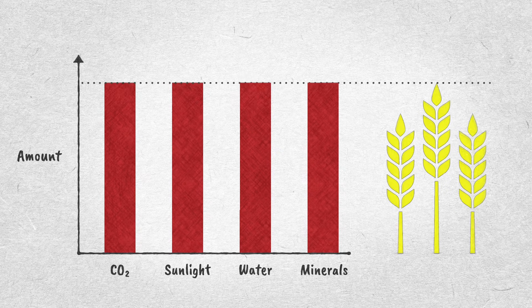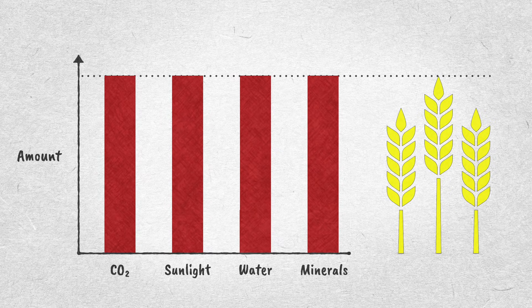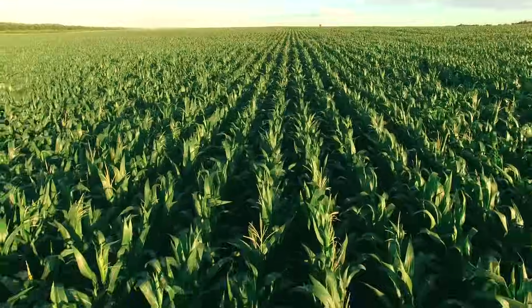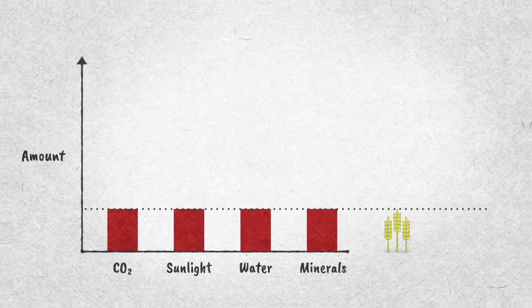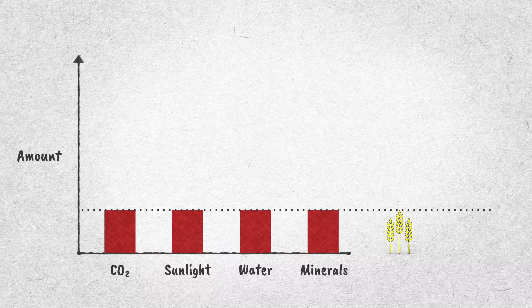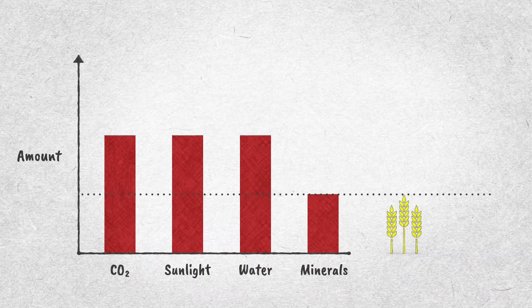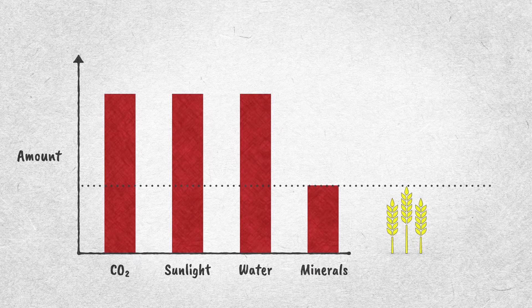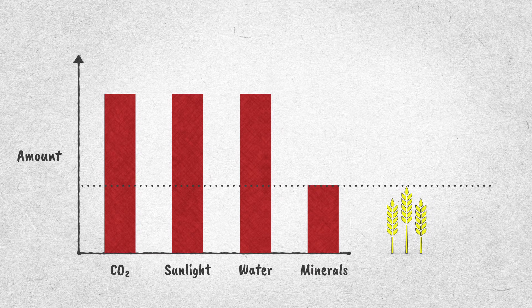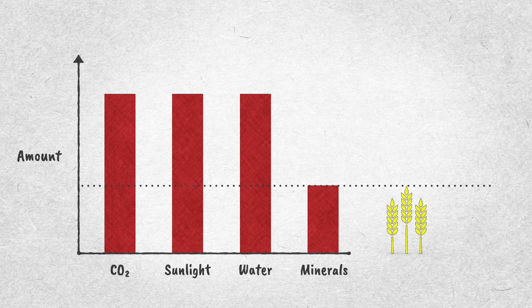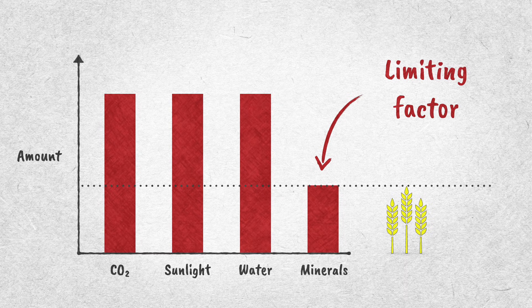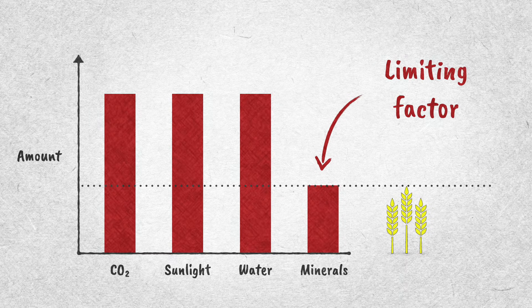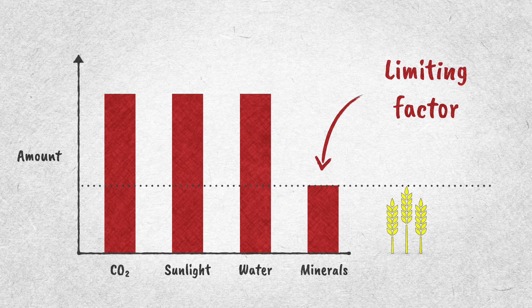The more of these things you give a producer, the better they'll grow. But if you don't give them enough of everything they need, it won't matter how much of the other resources they receive — growth will be limited. If something is in short supply like this, we call it a limiting factor, and it's common for minerals to be a limiting factor for growth.